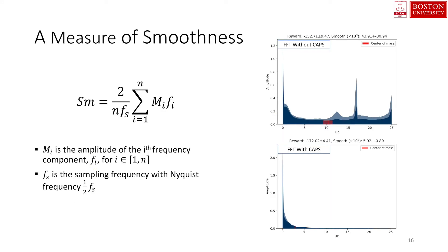On the right, we have the Fourier transforms for the pendulum example. On the x-axis, we have the different frequency components of the control signal, up to the Nyquist frequency. On the y-axis, we have the signal amplitudes. Note how the policy without CAPS has more significant high-frequency signal components, which corresponds to the oscillations observed in the control. To get a sense of smoothness, we could visually analyze the behavior of the policy or consider the FFT of the control signal. But we also wanted a single number that would give us a good indication of policy smoothness. To this end, we introduce a smoothness measure which effectively takes a weighted sum over the amplitudes of the frequency components, weighing higher frequency components higher. Smaller values on this measure thus represent smoother policies.